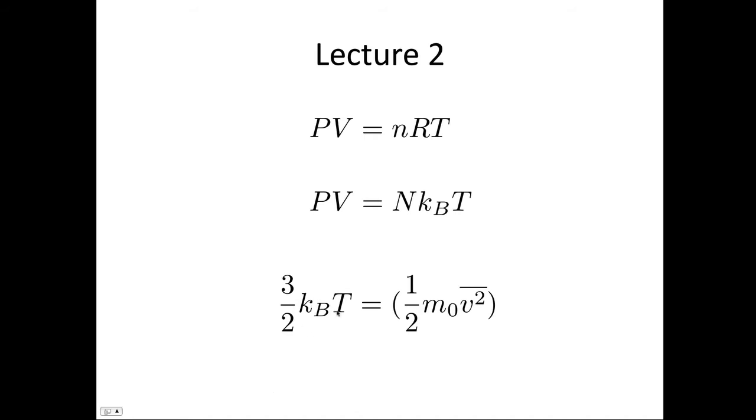We saw that 3/2 kBT was equal to 1/2 m0v̄² . The bar over the top of the v² means the average velocity squared. So this is really our way of defining temperature for a gas. The temperature is proportional to the translational kinetic energy.